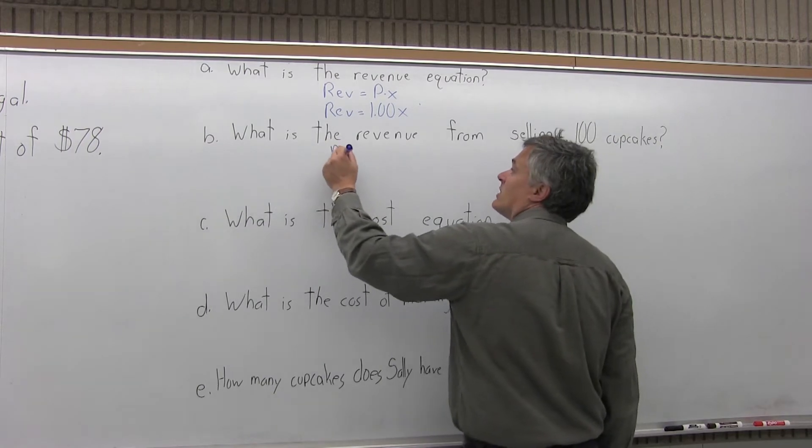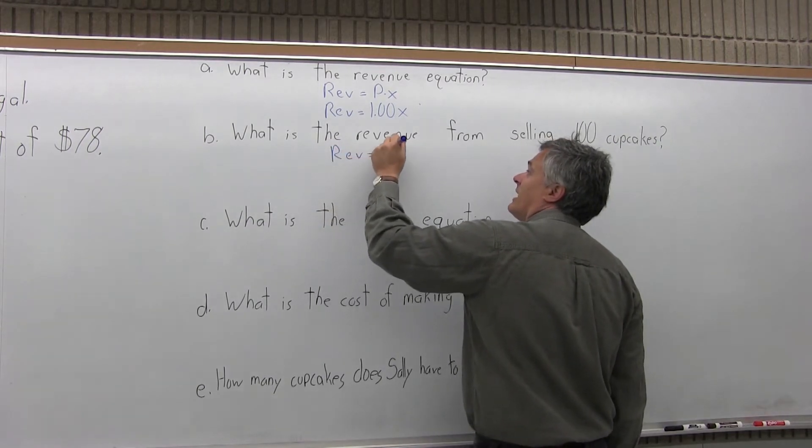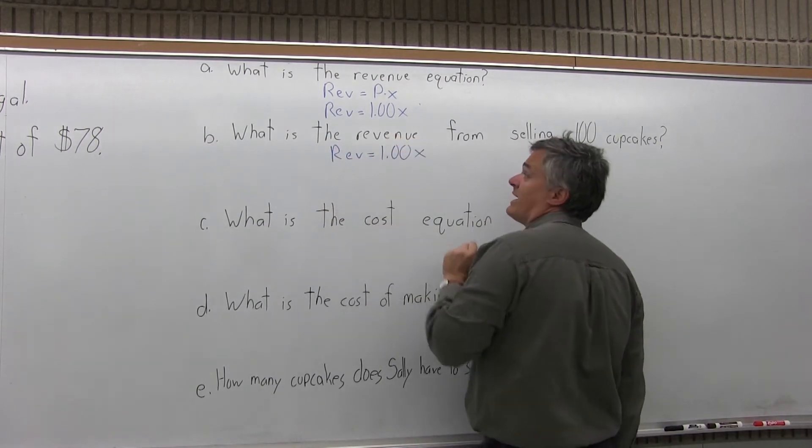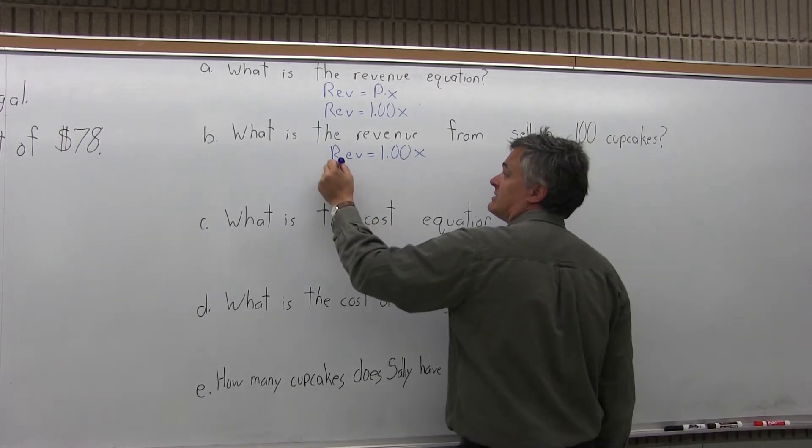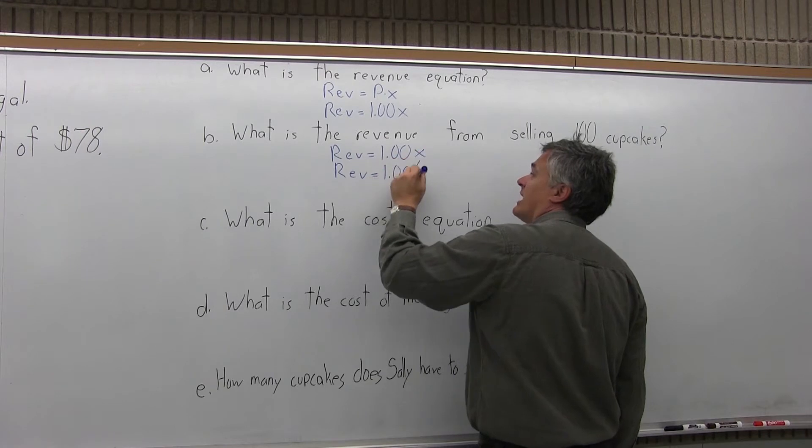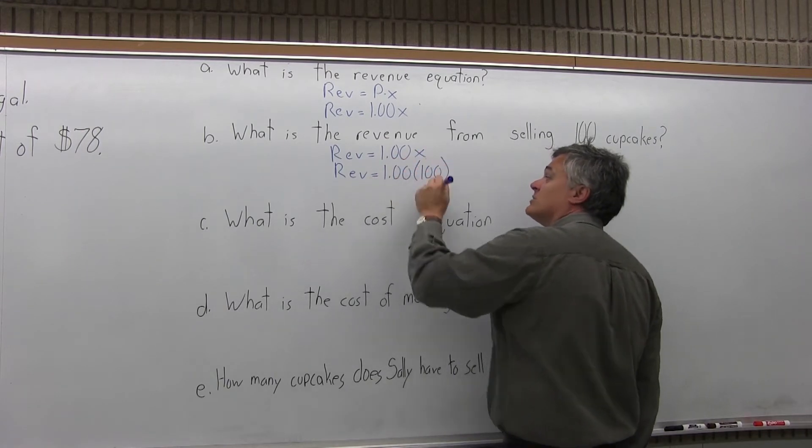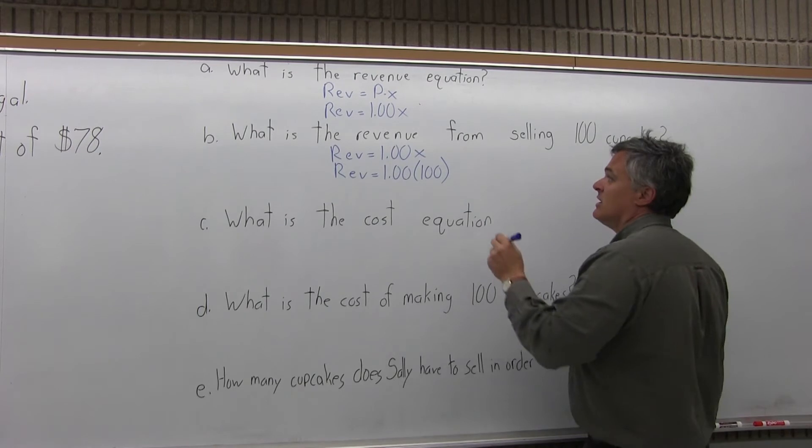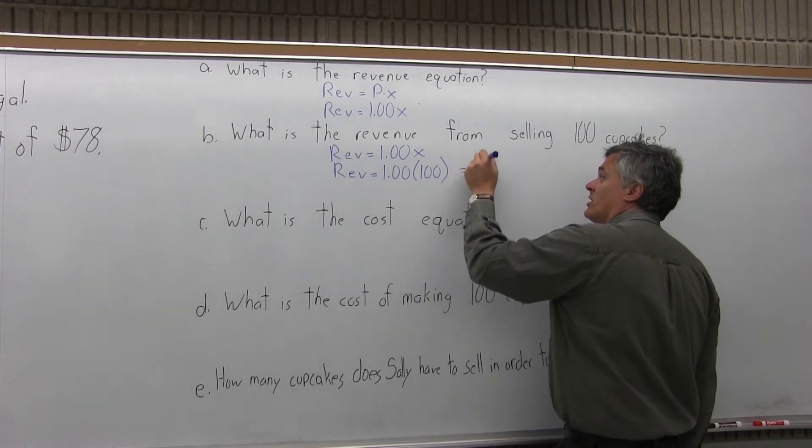So take our revenue equation that we found in part A of $1X, which is one dollar times X. And we'll have revenue equals one dollar times 100 as the quantity of cupcakes, which makes a revenue of $100.